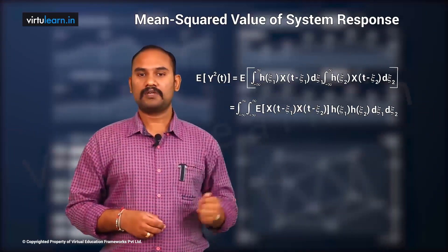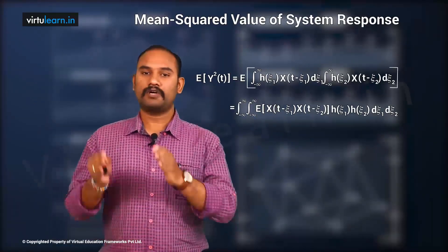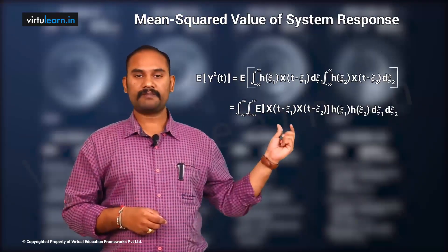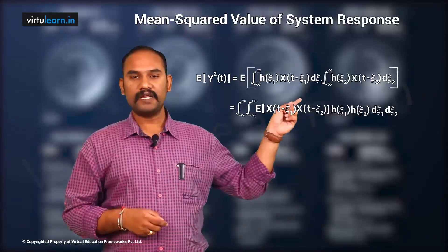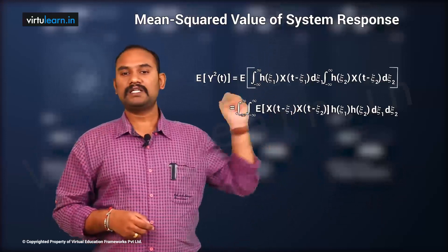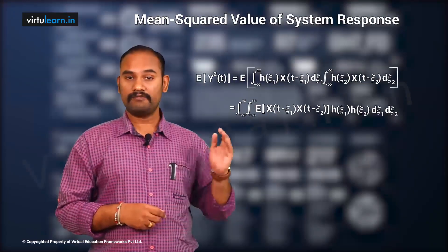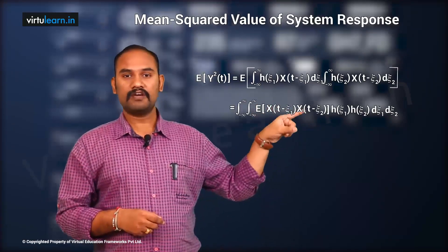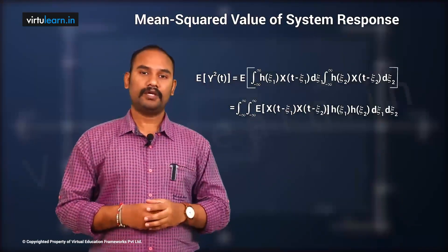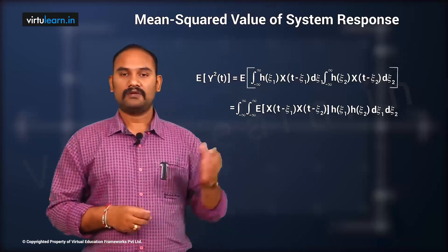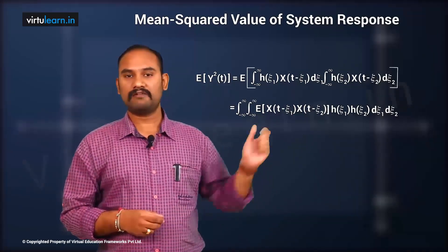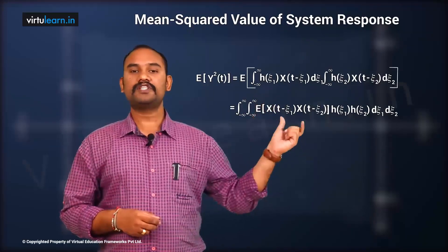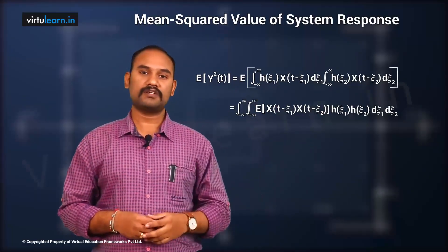We know the expression for y(t). Since we need E[y²(t)] = E[y(t) · y(t)], we write y(t) two times: E of { integral from −∞ to ∞ of h(ζ₁) · x(t − ζ₁) dζ₁ } · { integral from −∞ to ∞ of h(ζ₂) · x(t − ζ₂) dζ₂ }. We use different subscripts ζ₁ and ζ₂ to avoid confusion.